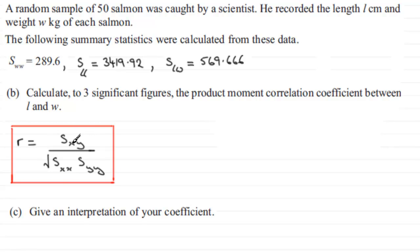is just replace the X and Y. If we replace the X with an L and the Y with a W, then our product moment correlation coefficient R is going to be given by SLW all divided by the square root of SLL multiplied by SWW. And we've got these values up here, so